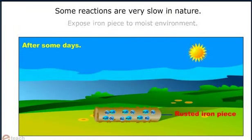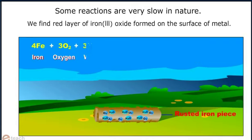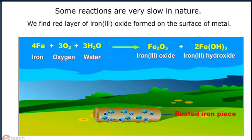We will also find a red layer of iron oxide formed on the surface of metal. The reaction taking place is 4Fe plus 3O2 plus 3H2O gives Fe2O3 plus 2FeOH whole thrice.